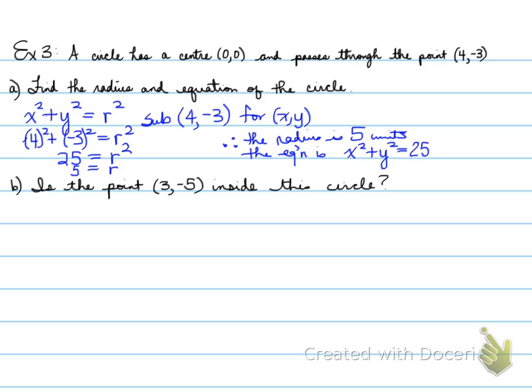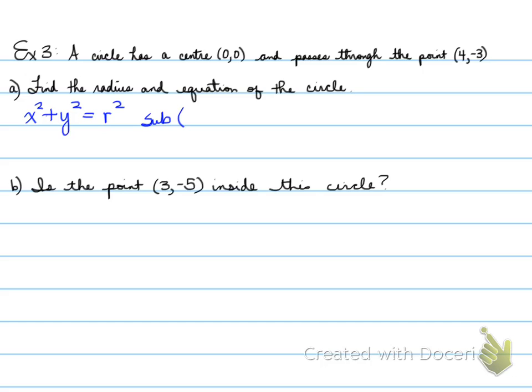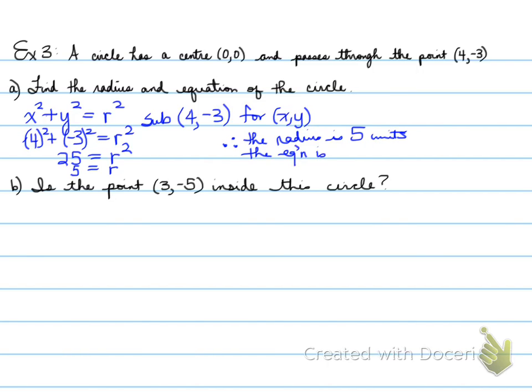We substitute 4, negative 3 for x and y into the equation x squared plus y squared equals r squared. We get 4 squared plus negative 3 squared is equal to r squared. That means r squared is equal to 25. So our radius length is 5 and the equation of the circle is x squared plus y squared equals 25.